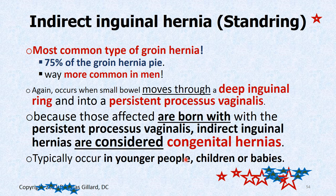Let's officially talk about indirect inguinal hernia. It's the most common type of groin hernia — 75% of all groin hernias — far more common in men. It occurs when intestine moves through the deep inguinal ring and gets stuck, potentially going all the way into the scrotum through the superficial ring. It moves through a persistent processus vaginalis, which is inside the inguinal canal and spermatic cord. Because it's a congenital problem — a failure of the processus vaginalis to close — these are considered by some to be congenital hernias, though they can present at any age.